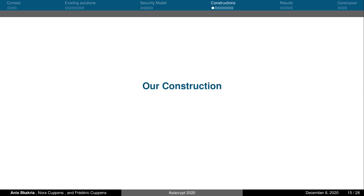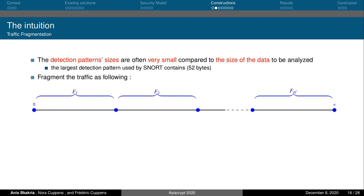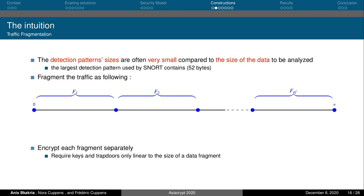Let's see our construction in more detail. The intuition behind our solution relies on the fact that the sizes of attack patterns are very often much smaller than the sizes of the exchanged data. For example, the largest detection pattern used by the Snort tool contains only 52 bytes. The idea is to fragment the data into a set of small segments of the same size and encrypt each of those segments separately. Instead of requiring keys and trapdoors of size linear to the size of the data, this fragmentation technique will enable us to construct a scheme that requires keys and trapdoors of size only linear to the size of a data fragment.